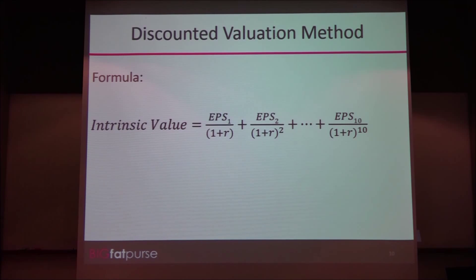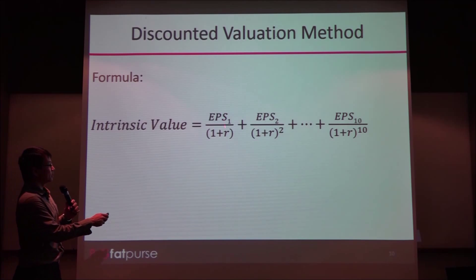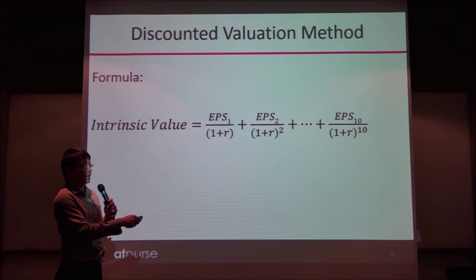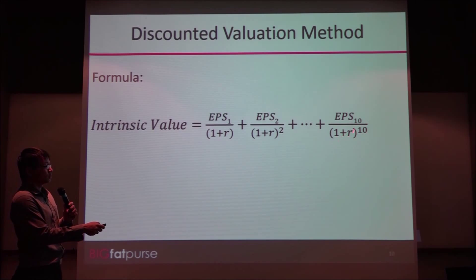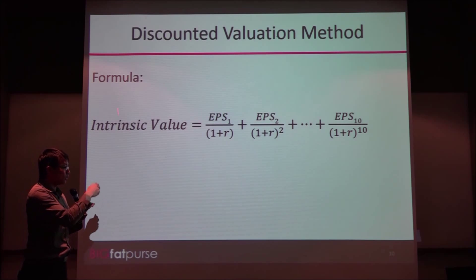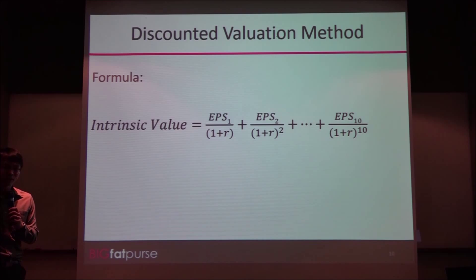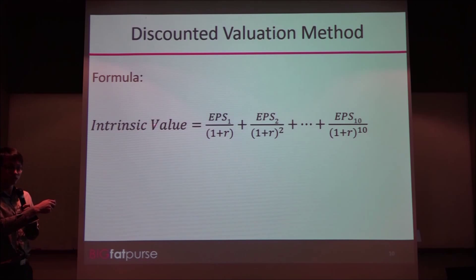Here is the formula — a very complicated one, not simple addition and subtraction. EPS is earning per share: first year EPS, second year EPS, and you add up to 10 years of earning per share. The denominator is the discount factor, because future earnings are worth less than today's earnings, so we divide. I know this formula is complicated, so I won't ask you to calculate it — I'll give you a calculator. If you know the inputs — earning per share and the discount factor — you'll get the intrinsic value.